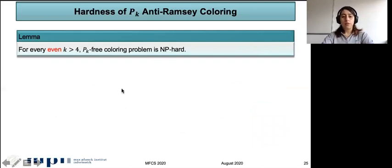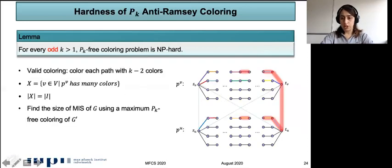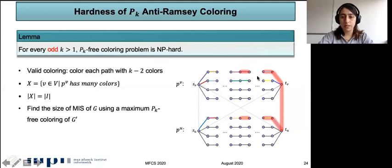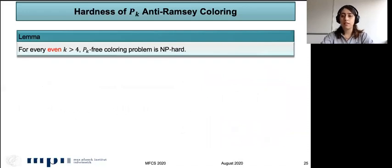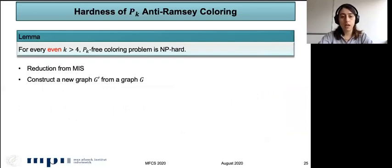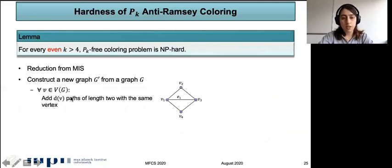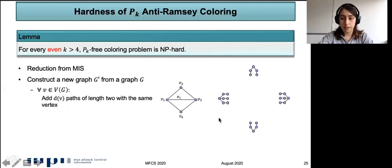For even values of K, we cannot use this gadget because K−1 is odd, so we don't have two middle edges that can share the same color. This gadget doesn't work for even K, but we use essentially the same idea — a reduction from maximum independent set — but we build G' differently. For each vertex V in V(G) with degree d_V, we add d_V paths of length two sharing the same vertex V.